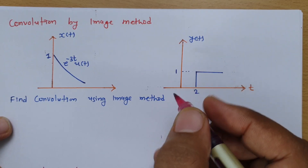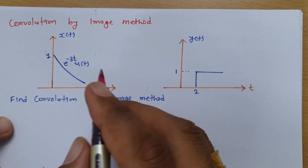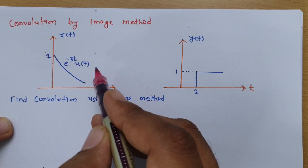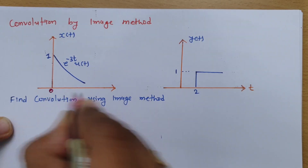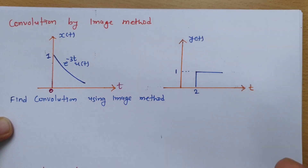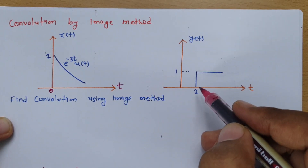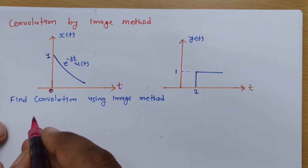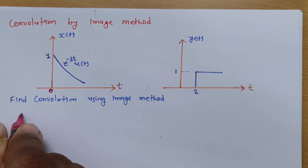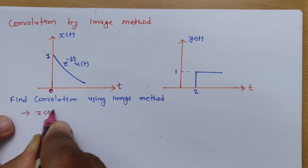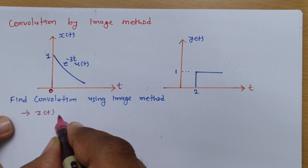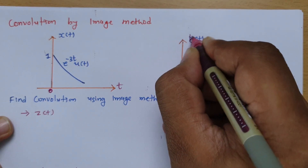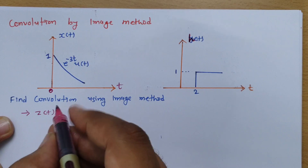Before I explain this method, first we need to look at the two given signals. x(t) is e to the power minus 3t into u(t), meaning this signal starts from 0 and goes towards infinity. y(t) is a signal starting from 2. So if I say the convolution z(t), and instead of y(t) I call it h(t), then z(t) is x(t) convolved with h(t).